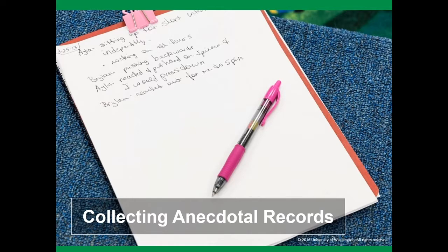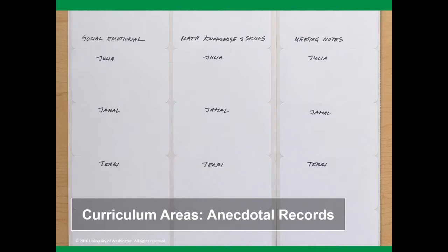The presence of paper or note cards also serves as a reminder to document observations. Another way to collect anecdotal records is for the teacher and aide to use sheets of labels to write down observations of children's behavior. Each column of labels is used for a different domain in the Head Start Child Development and Early Learning Framework. Children's names are pre-printed to remind teachers to observe each child in every area. After class, the labels are placed in the individual child's portfolio or binder.